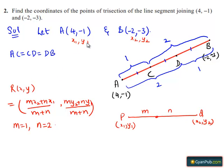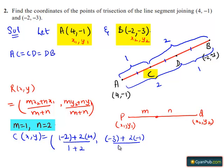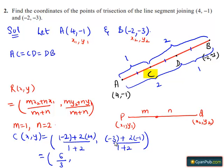Substituting the values of x1, y1, x2, y2, M, and N in the formula, we get the coordinates of C as: C(x, y) = ( (1×(-2) + 2×4) / (1+2), (1×(-3) + 2×(-1)) / (1+2) ) = ( (-2 + 8) / 3, (-3 - 2) / 3 ) = (6/3, -5/3) = (2, -5/3).